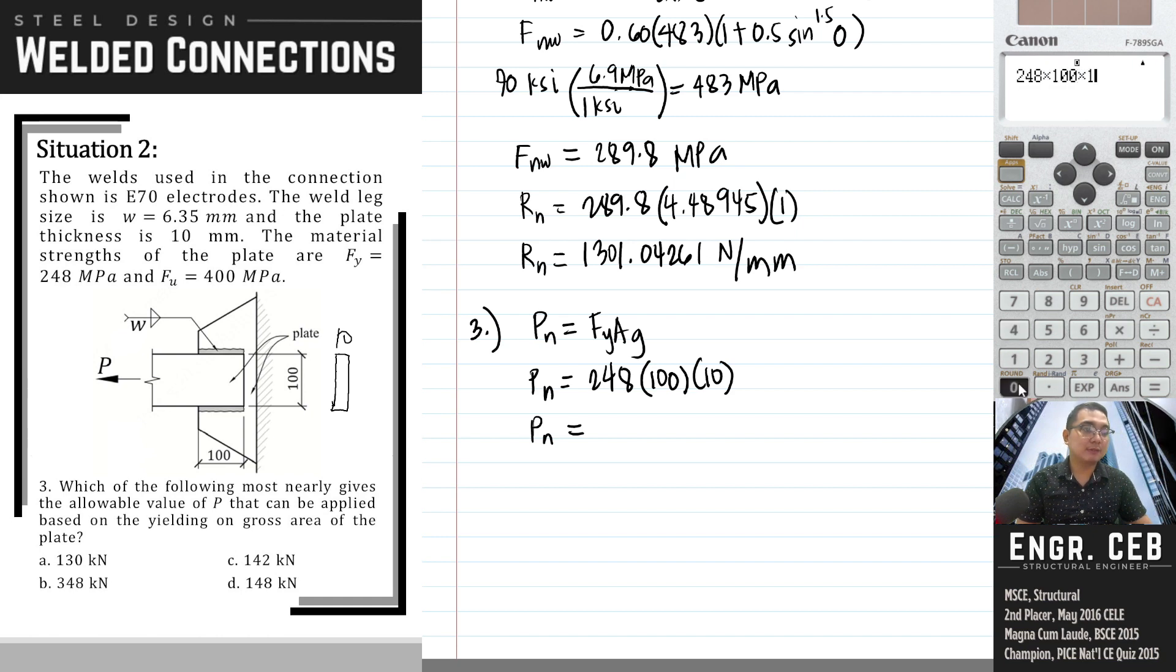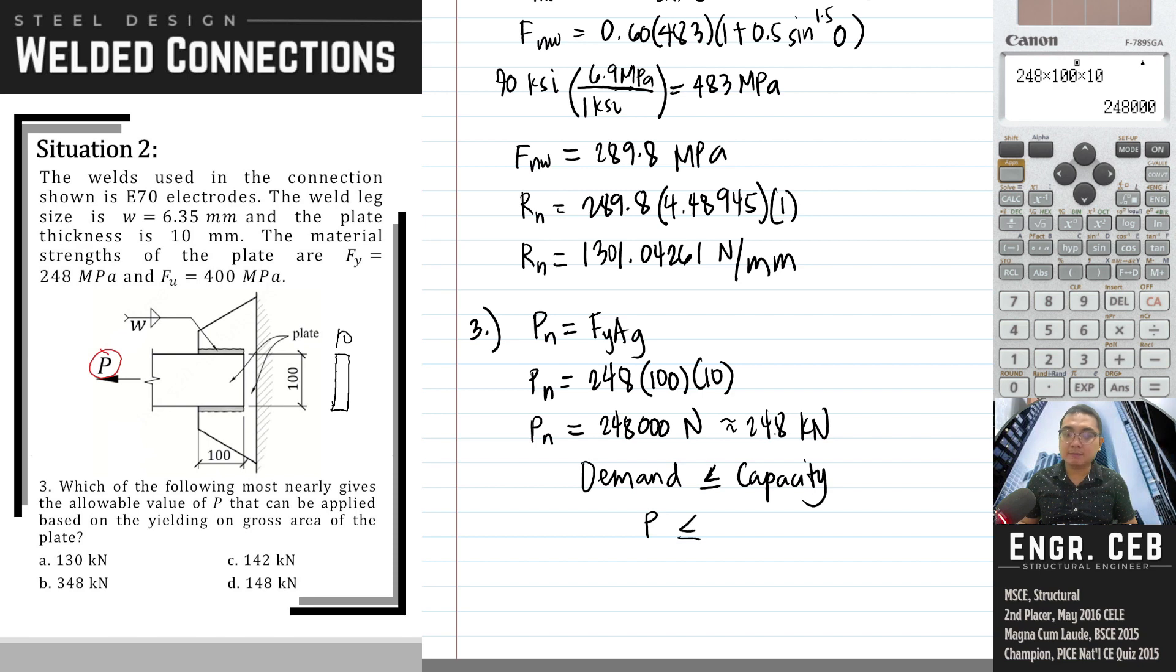For the allowable value of P, we use ASD. The demand is simply P. To get the allowable value of the force, we equate the demand to capacity. The demand is P and the capacity is 248,000, but we have to divide this by the factor of safety based on yielding on gross area, which is 1.67. Therefore, the allowable value of P is 148.502994 kilonewtons, and that is letter D.